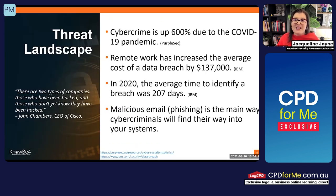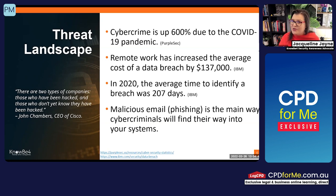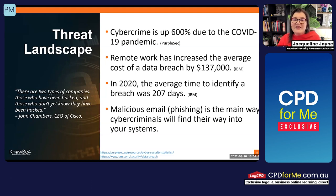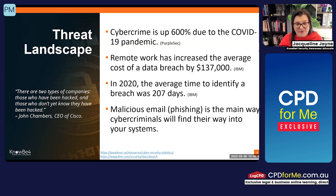Let's take a look at the cyber threat landscape as it relates to you and also the globe itself. There are no specific areas where it only happens in Australia, or Asia, or Europe — cyber security has no borders and it really is global. Cyber crime is up 600% as a result of COVID-19. Remote work has increased, and therefore the average cost of a breach has increased to $137,000. So if a company is breached, that's what it can cost, if not more — and remember, this is the average.